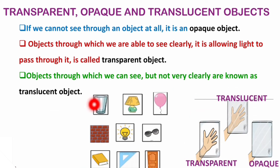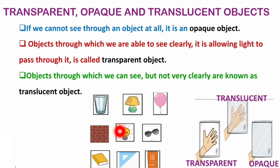Here are some examples. A glass through which you can see clearly is transparent. A balloon is an opaque object. A wall is an opaque object. A colorful light cover is translucent, but the plain glass on top is transparent. Goggles with colored glass are an example of translucent objects because you can see through them but not completely clearly. A book is opaque. A door is opaque. A clear set square is transparent, but if it is colorful, it becomes translucent.